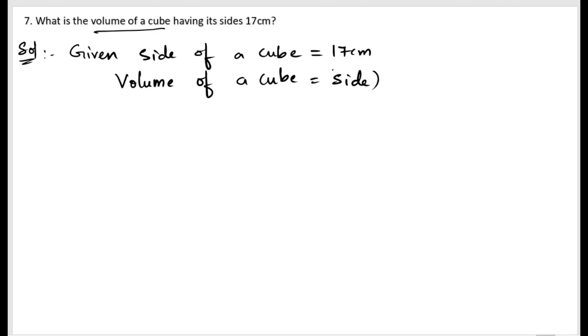Here the side is 17 centimeter, so 17 centimeter cubed. We know 17 squared times 17. 17 squared is 289, so let us write down that 289 into 17. 7 times 9 is 63, 7 times 8 is...